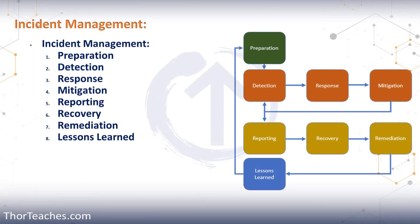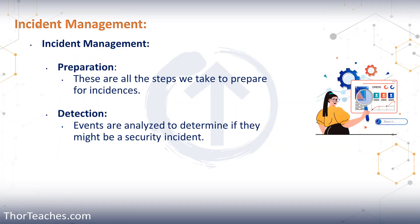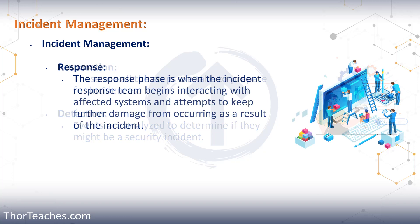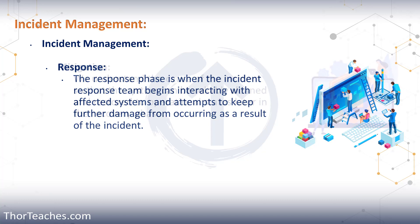Then we finished out by talking about the eight steps of incident management. We start with preparation — just like any good project, we need the right stakeholders and to understand what exactly we are protecting, what is in scope and what is out of scope. Then we do detection, where we realize we've been attacked. We respond — that is when the incident response team starts working on the systems — and we try to contain the damage as much as possible.